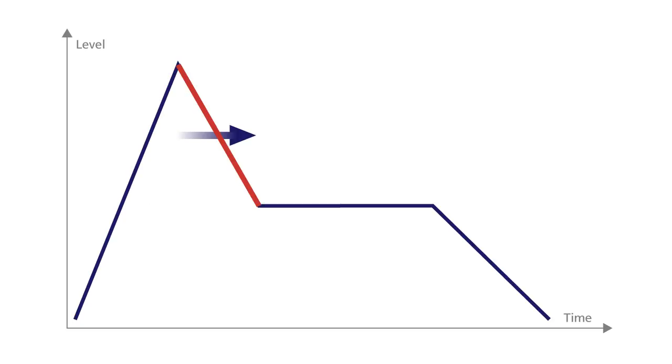The second stage is the decay stage. After a note has hit the maximum level at the end of the attack stage, it will start to decay until it reaches a plateau. You can set the decay time, in other words, the time it takes for the level to go from the maximum amount to the plateau level.